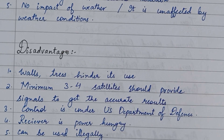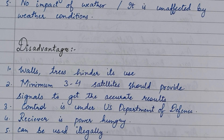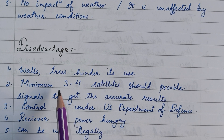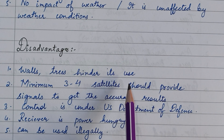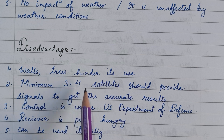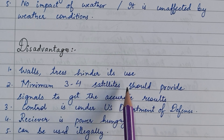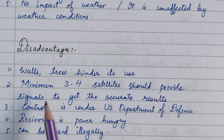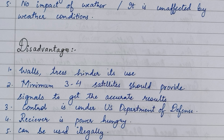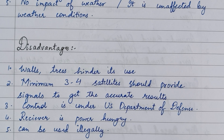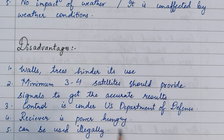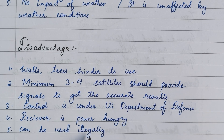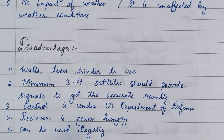Disadvantages of GPS: walls and trees hinder its use. A minimum of three to four satellites should provide signals to get accurate results. Control is under the US Department of Defense. The receiver is power hungry, and GPS can be used illegally.